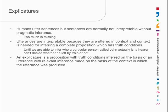So an explicature is a proposition with truth conditions inferred on the basis of an utterance, with relevant inferences made on the basis of the context in which the utterance was produced. If we take the example 'can you come and meet me?' — let's suppose I've been talking on the phone to my friend Ophelia, so we can now have a good guess at who 'you' might be. She's saying this to me, so the speaker, 'me', is Ophelia.